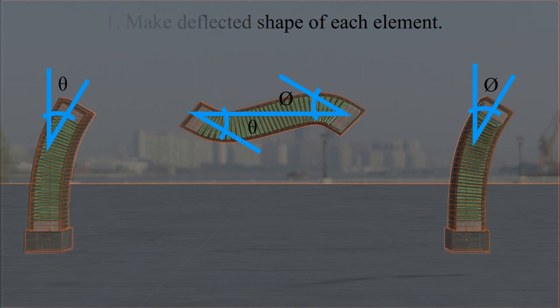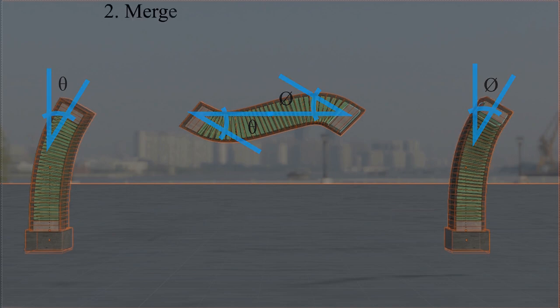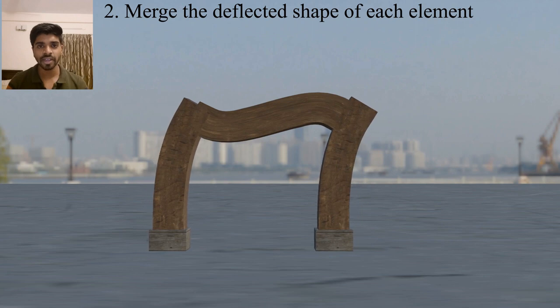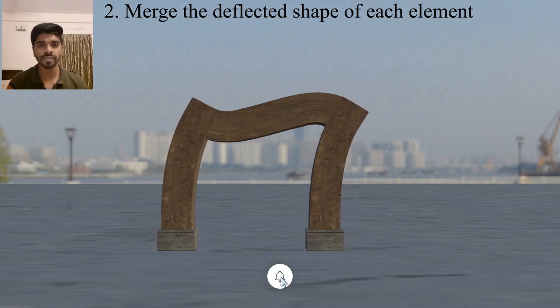So here our first step is finished. We have made a deflected shape of each element. Now in the second step, we will merge all these elements in the same way. So we will have a rough deflected shape of the overall structure ready. So this is a rough deflected shape of our single bay portal frame due to the point load at the joint.